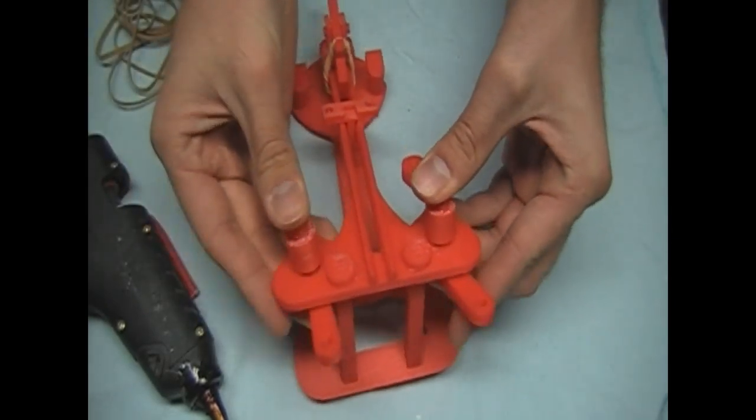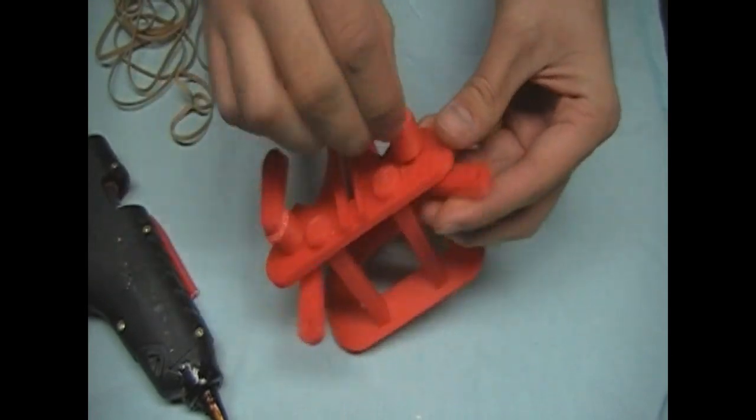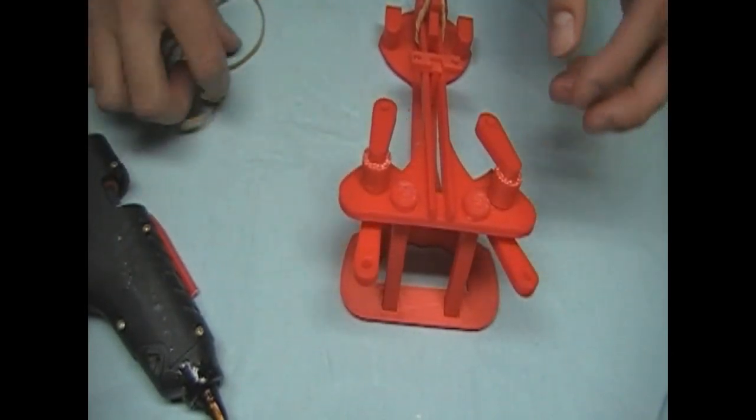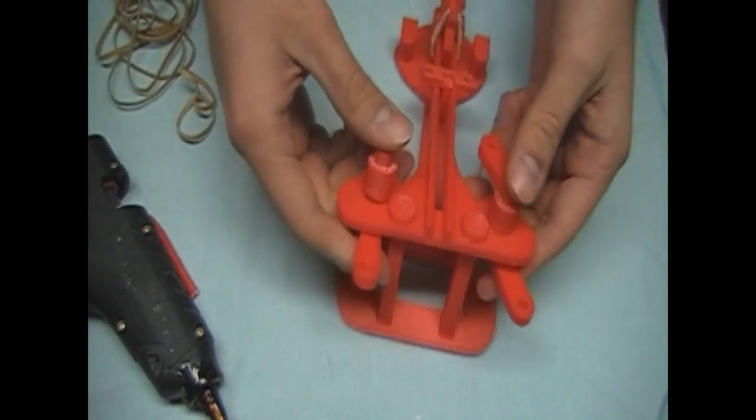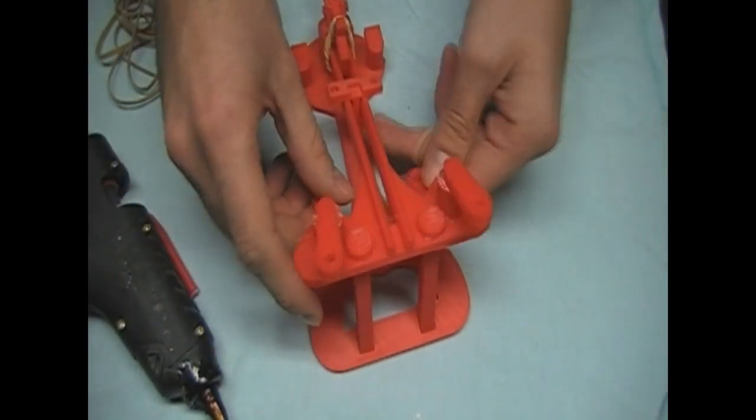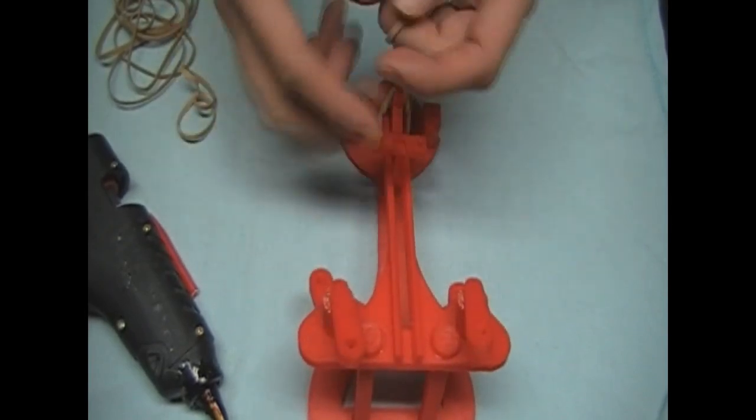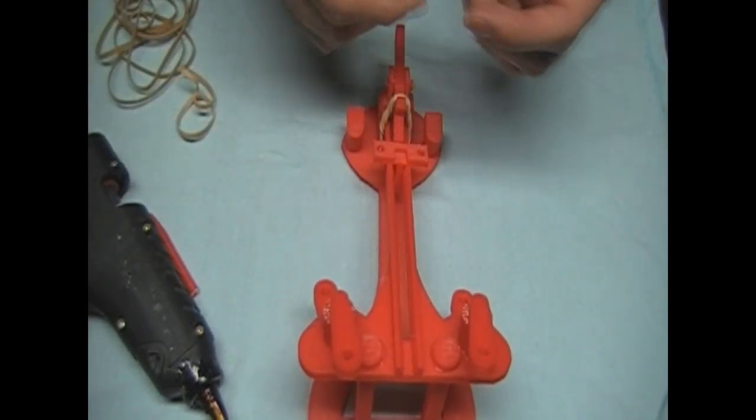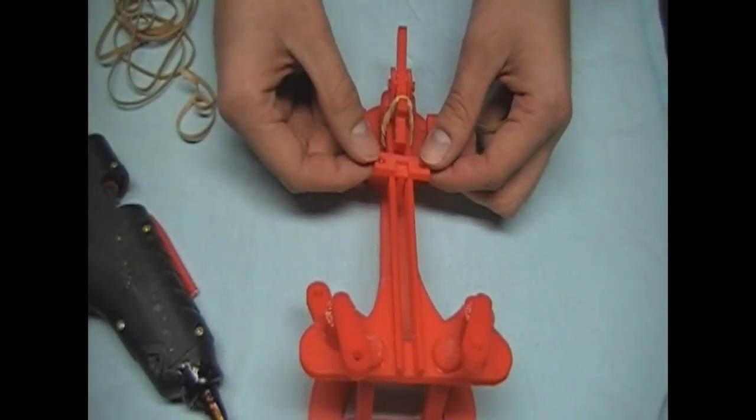So now you have them set up like so. Next, you install a rubber band going from this back part right here to this. And then you're going to install another rubber band from these two holes to this hole.